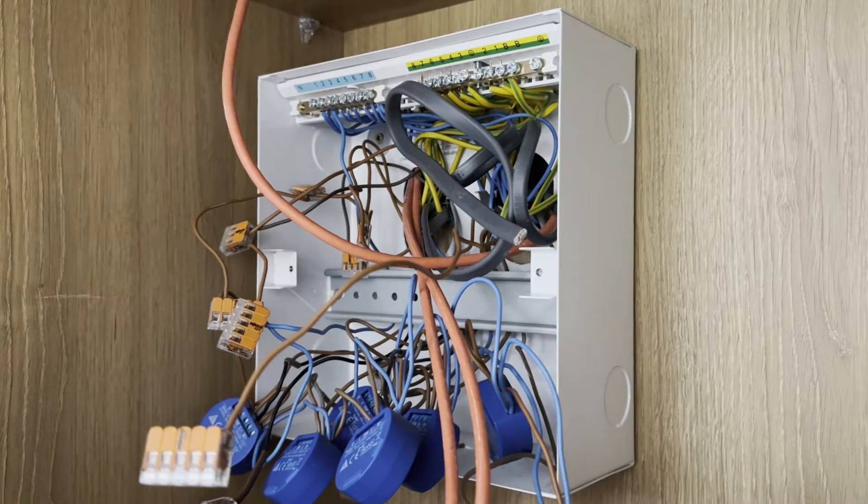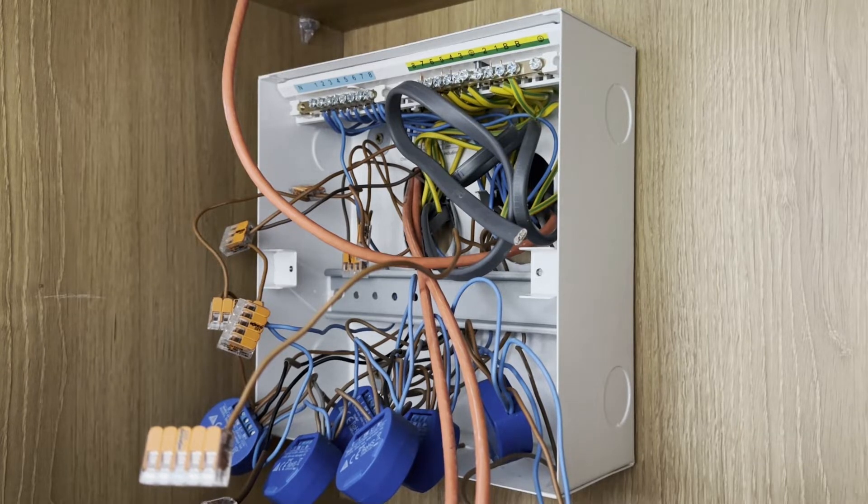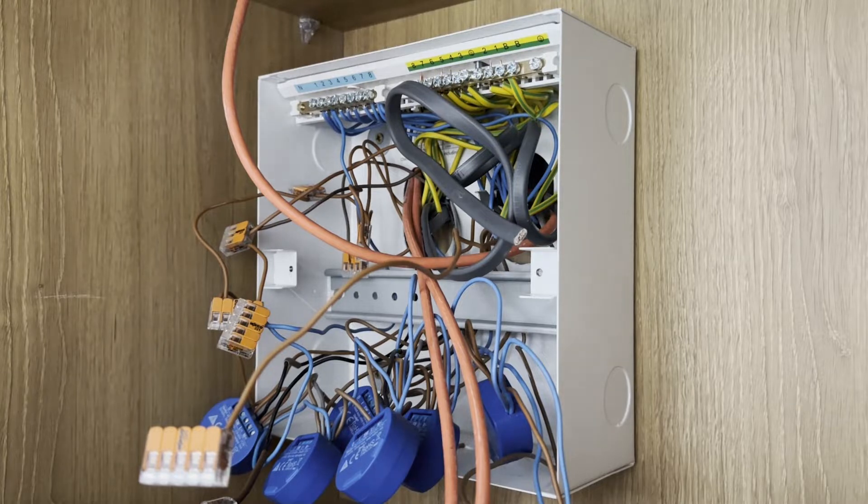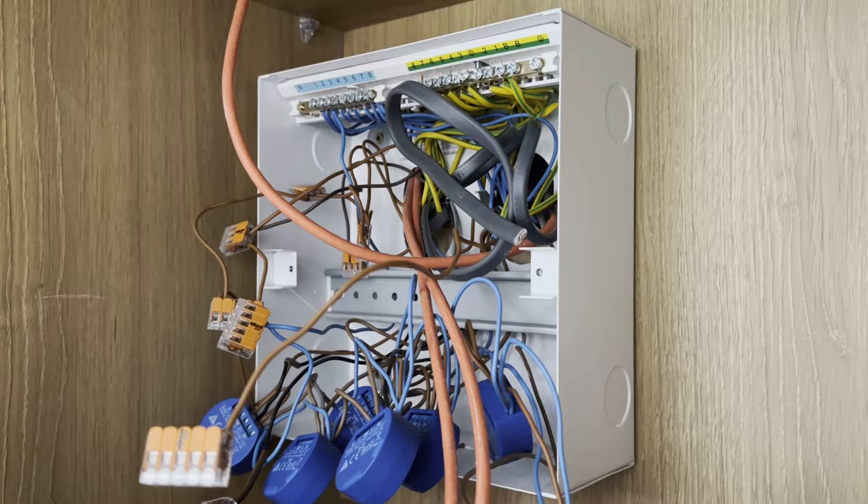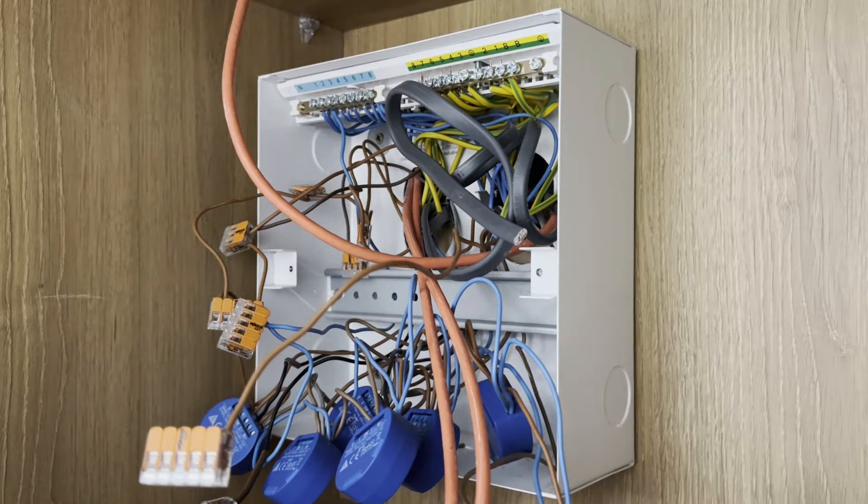All right so this is the consumer unit that my electrician added in. It's a bit of a mess as you can see there's quite a few Shelleys on show but basically this cabinet has wires going to each of the switches in the kitchen and wires going to each of the lights in the kitchen.